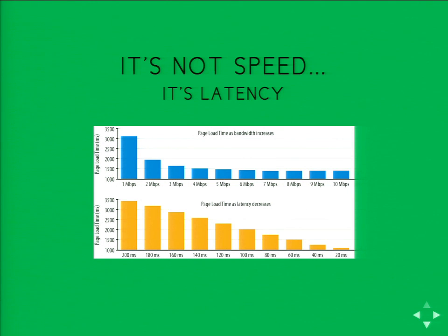We have two charts here. The top chart shows page load time versus connection speed from 1 to 5 megabits per second. As speed increases, we hit a point of diminishing returns — it doesn't load much faster once you hit 3 to 5 Mbps. Speed isn't the key factor. However, looking at latency — the round-trip time for a packet from a user's computer to your server and back — decreasing latency has a direct correlation to page load time. The more we decrease latency, the faster the page loads.